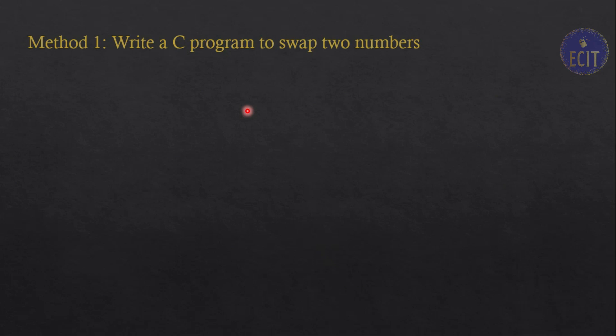If you are preparing for C programming interviews as a software developer, this is one of the most common questions asked. In this video you are going to learn about how to write a C program to swap two numbers. There are multiple methods and we are going to see each and every method one by one.